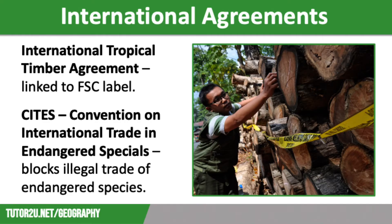The final agreement is the Forest Stewardship Council, the FSC. The FSC promotes sustainable forestry and tries to encourage manufacturers and consumers to buy sustainable hardwoods, such as mahogany, in the hope that this will reduce the demand for rare hardwoods that are at risk. Products that have been sustainably sourced carry the FSC label.